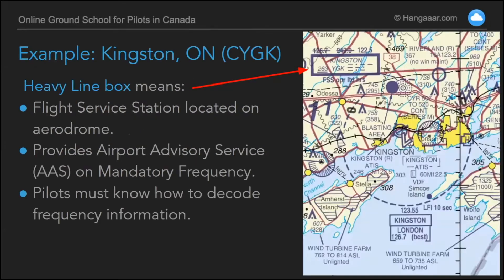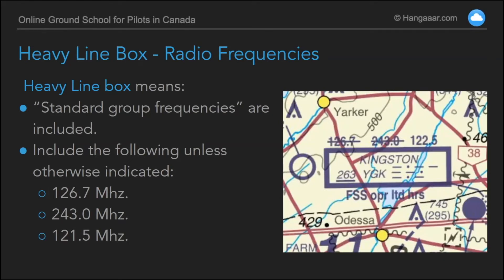The example we've used here is Kingston. So what Donna was talking about was the heavy line box. The heavy line box means there's a flight service station on site that's normally going to be providing airport advisory service on a mandatory frequency. So you have to learn to decode this. Here's a close-up of it.